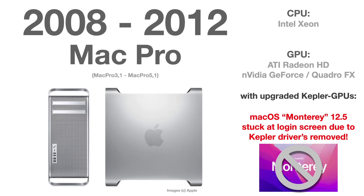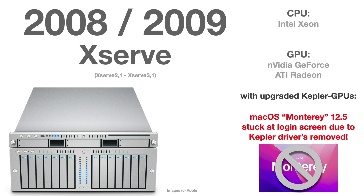The same applies to Mac Pros 3,1 through 5,1 — the versions from 2008 to 2012. They did not ship with a Kepler GPU, but if you upgraded to one you'll run into the same kind of problems. And for completeness, if you own an Xserve server — an exotic model — the same applies, as they are basically a Mac Pro in server form.